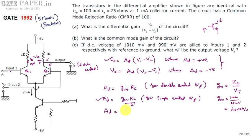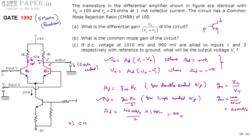The differential mode gain is AD = 40 mA/V × RC / 2. RC is 1 kilo-ohm, so AD = (40 × 1k) / 2 = 20. The differential mode gain is 20. For common mode gain, using CMRR: AC = AD / CMRR = 20 / 100 = 0.2.